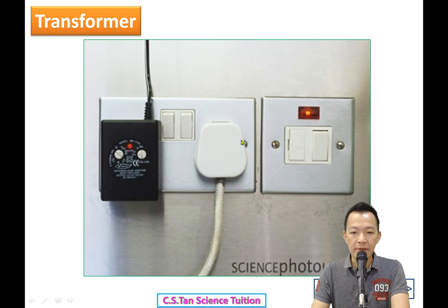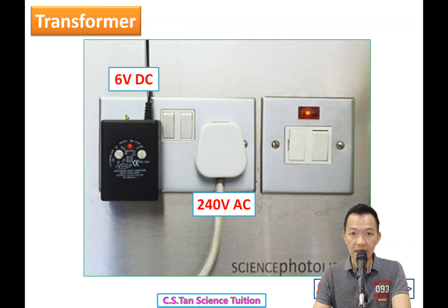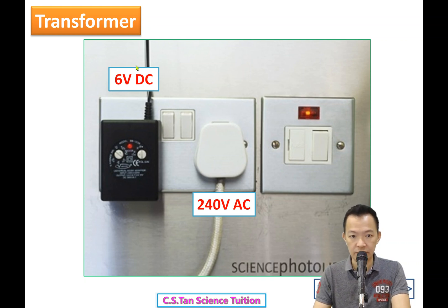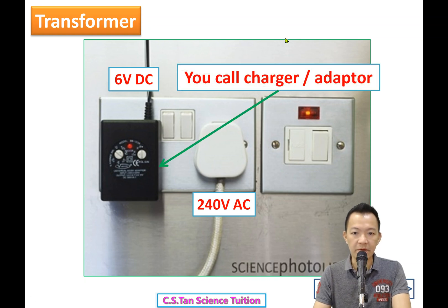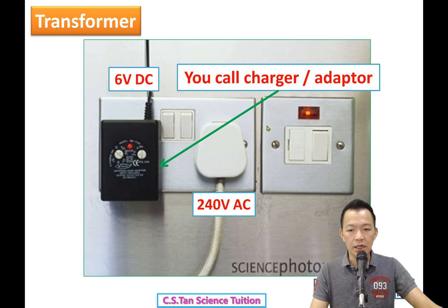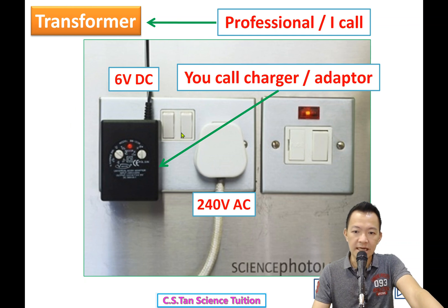In Malaysia, TNB supplies 240 volts AC. But if you want to charge your phone or use a CD player that needs 6 volts DC, you need an adapter. Some people call it a 'charger' (zha zhe) or adapter — inside it contains a transformer.